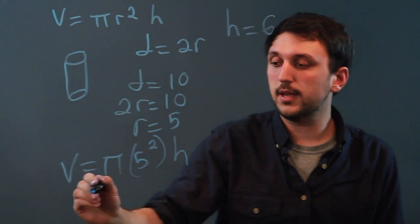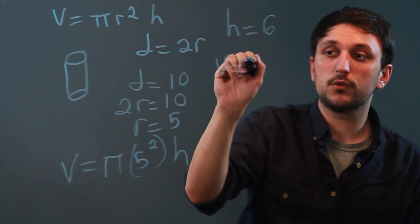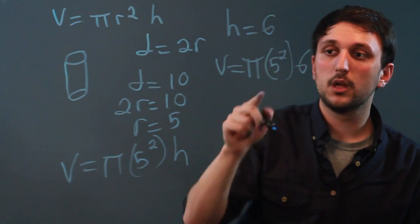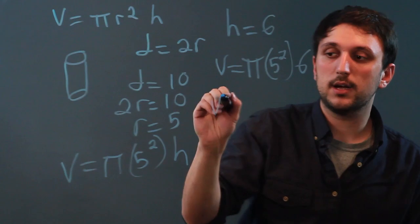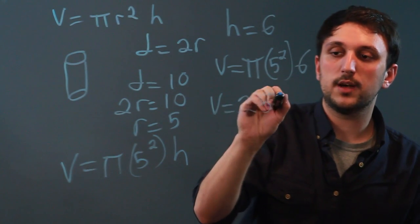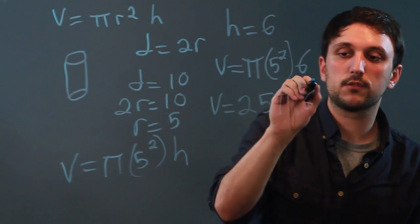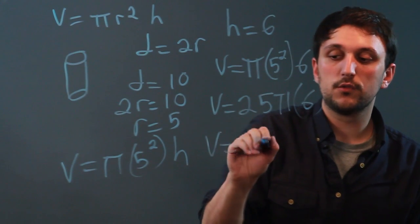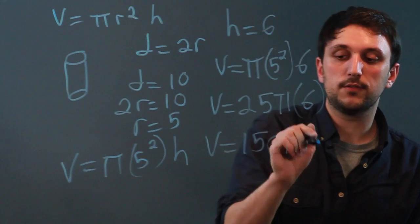So now we can say V equals pi 5 squared times 6. So 5 squared is 25, so 25 pi times 6, which is 25 times 6 is 150. So the volume is 150 pi.